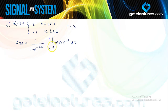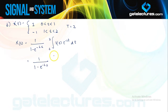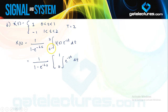Now I can break these limits according to the time intervals, since this function has different values for time intervals between 0 and 1, and 1 and 2. I can write this as 1 upon (1 minus e to the power minus 2s), with integration from 0 to 1 where the function has value 1, and for 1 to 2 the function has value minus 1.